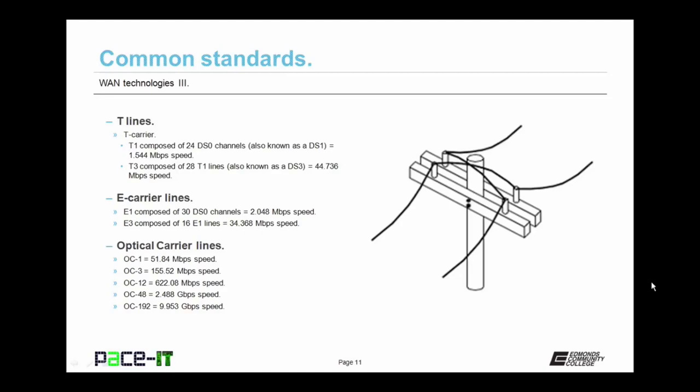If that's not fast enough in Europe, you can lease an E3 line, composed of 16 E1 lines, which gives you up to 34.368 megabits per second. While a T1 is slower than an E1, a T3 is faster than an E3. For OC lines, the OC1 is capable of 51.84 megabits per second. The OC3 gives you up to 155.52 megabits per second speed.